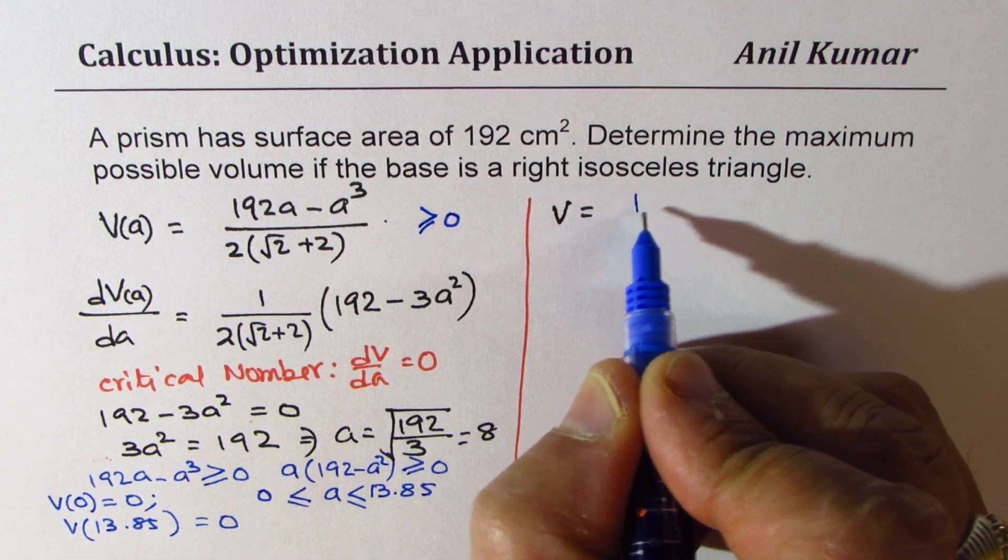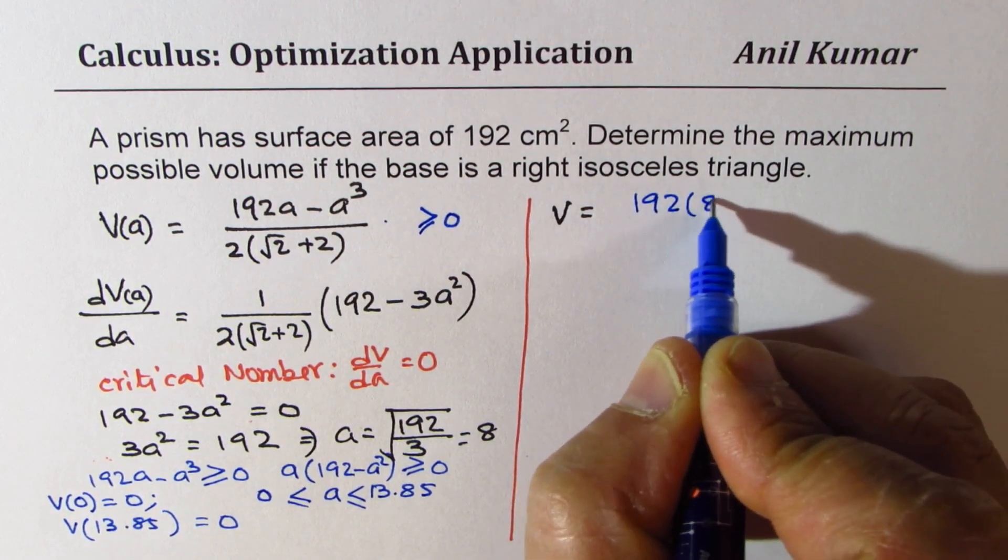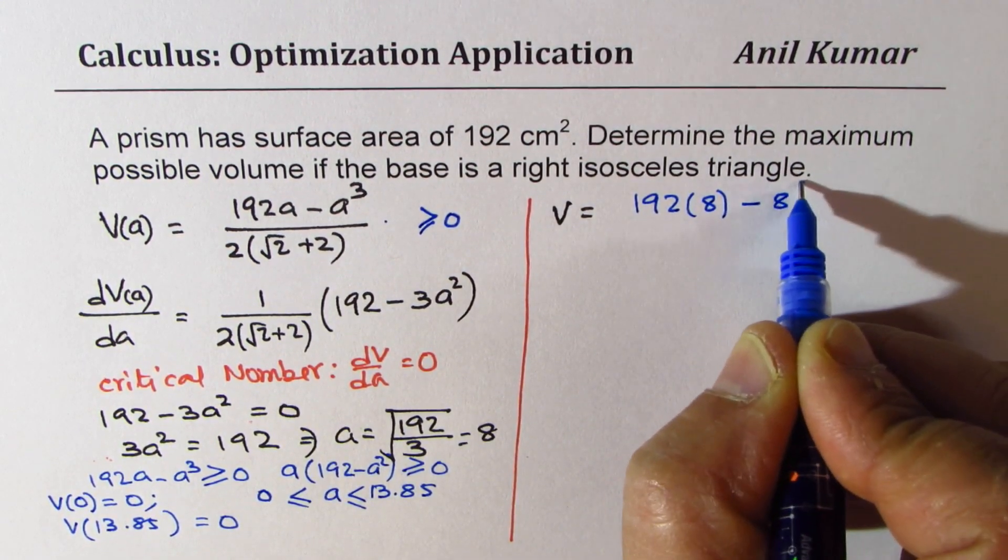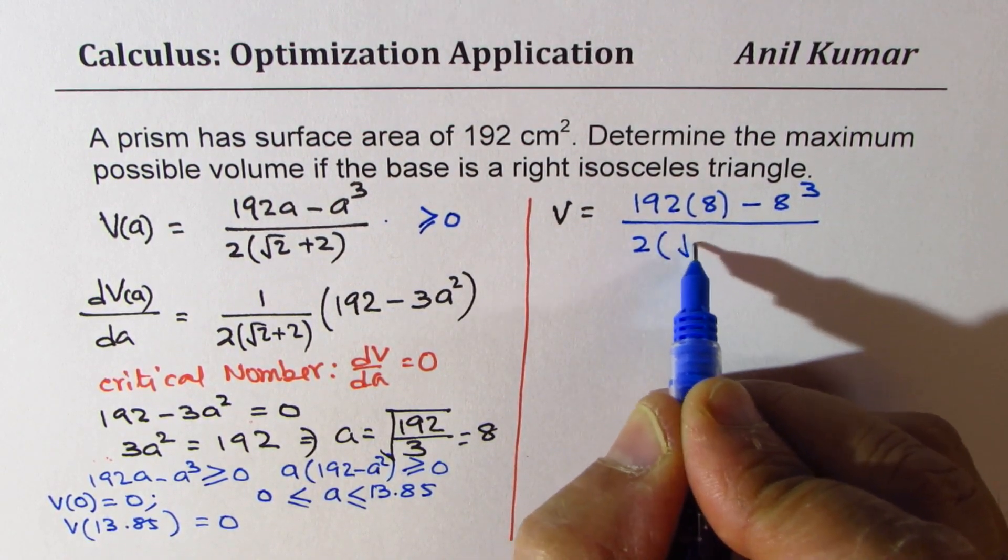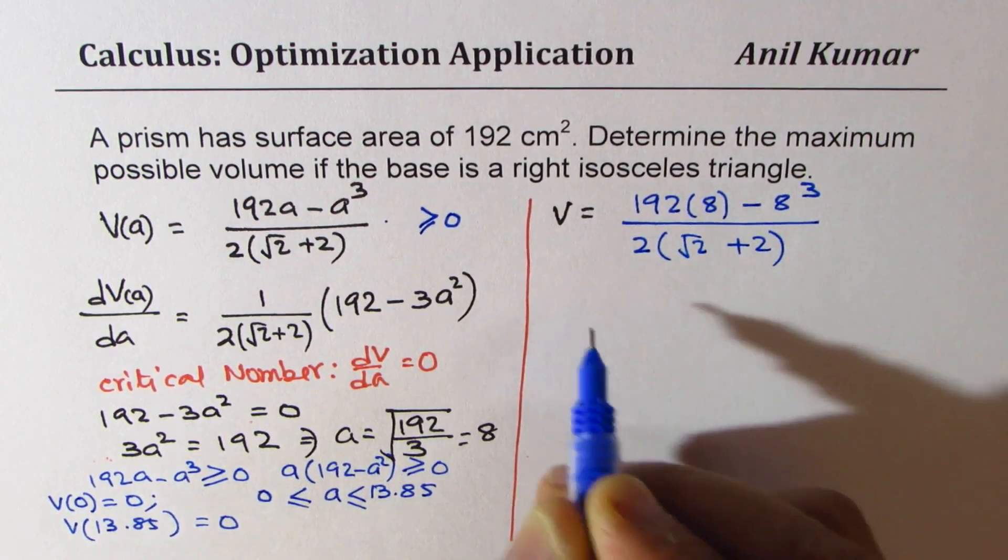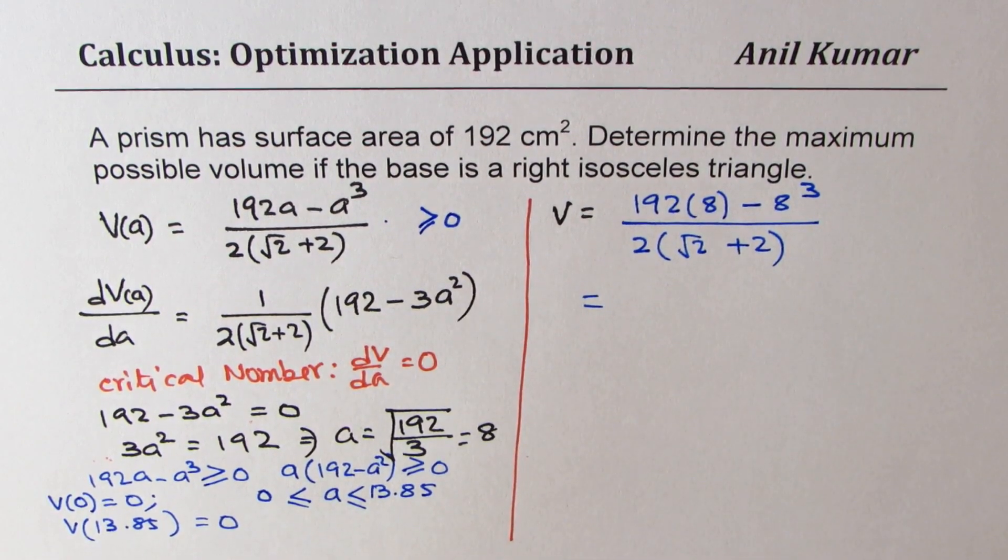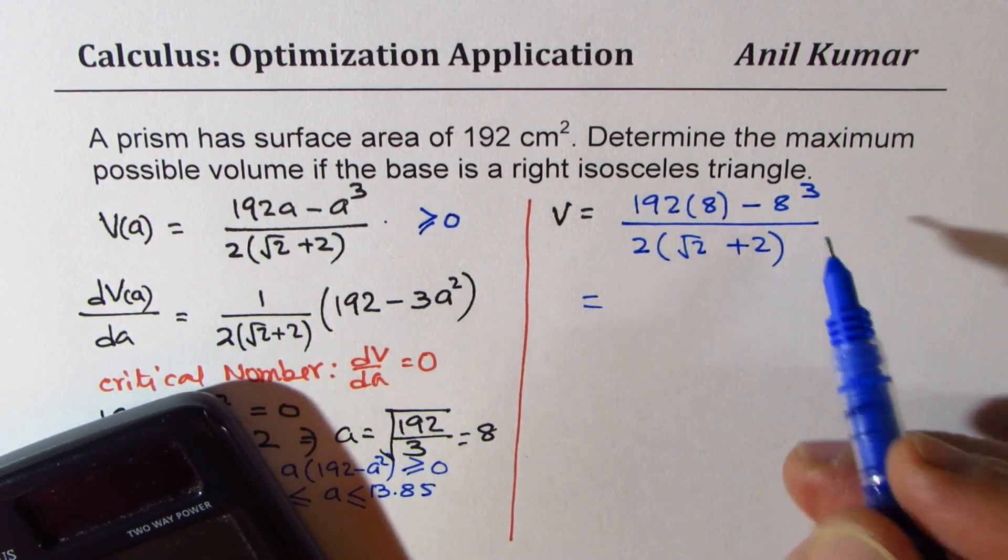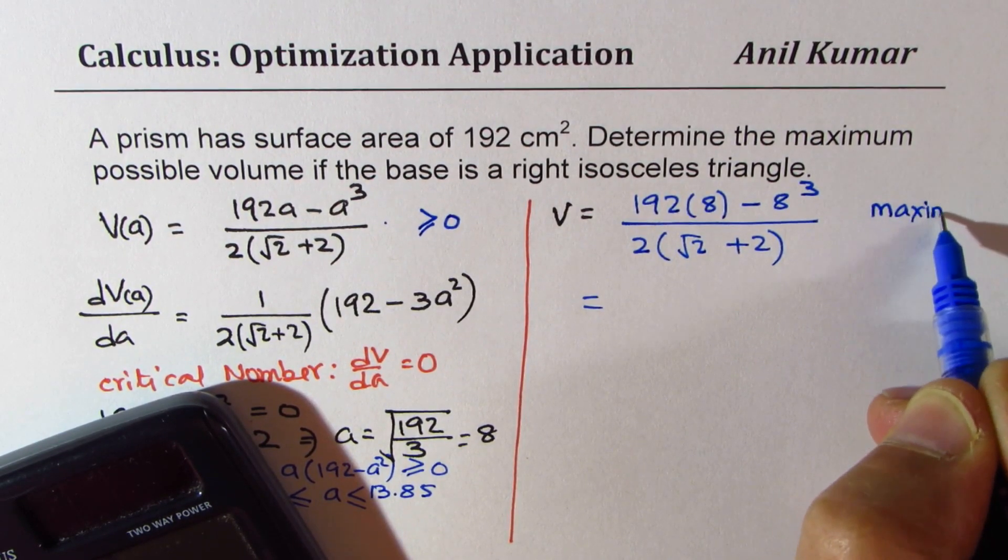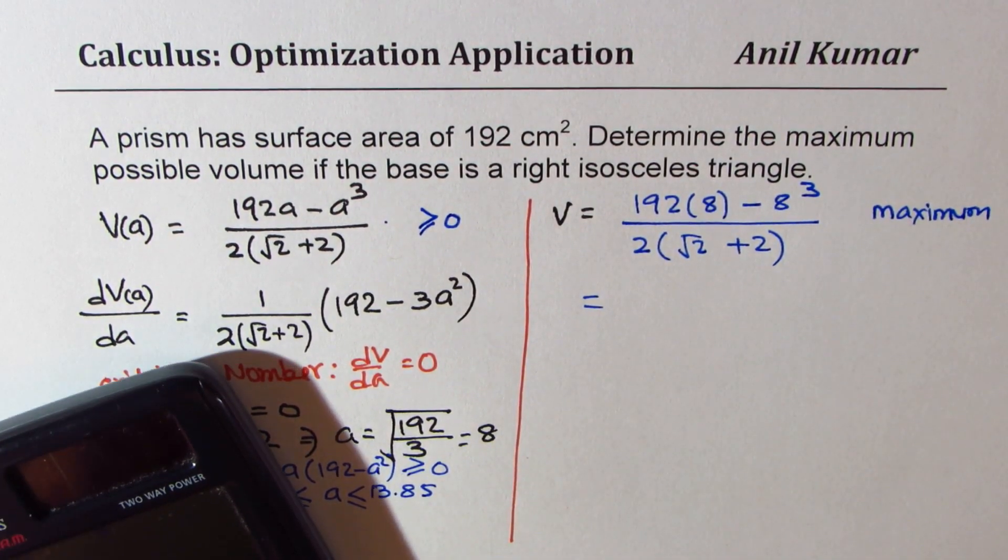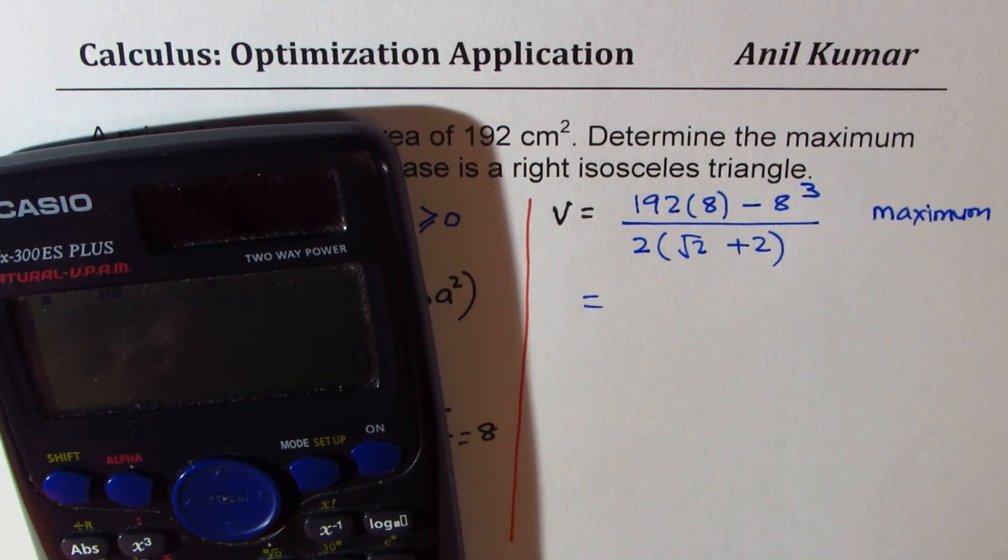So if I substitute 8, I get 192 times 8 minus 8 cubed divided by 2 times square root 2 plus 2. So let's calculate this answer. So this is positive, so it is a maximum value. We get it from extreme value theorem.